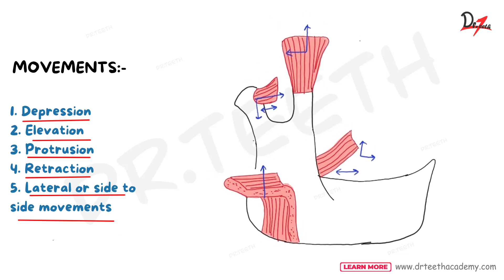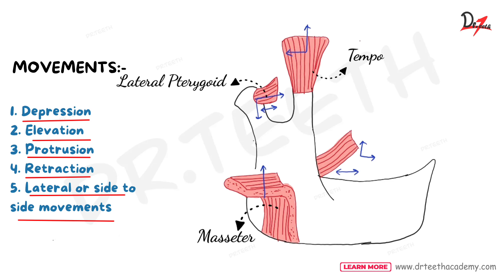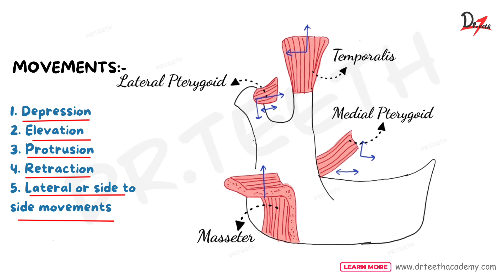Now, which muscles produce which kind of movement? Depression is brought about by the lateral pterygoid muscle. Elevation is brought about by the masseter, anterior vertical and middle oblique fibers of the temporalis, and the medial pterygoid muscle of both sides — these are also known as anti-gravity muscles. Protrusion happens by the lateral and medial pterygoids and superficial oblique fibers of masseter. Retraction is done by the posterior horizontal fibers of temporalis and deep vertical fibers of masseter.